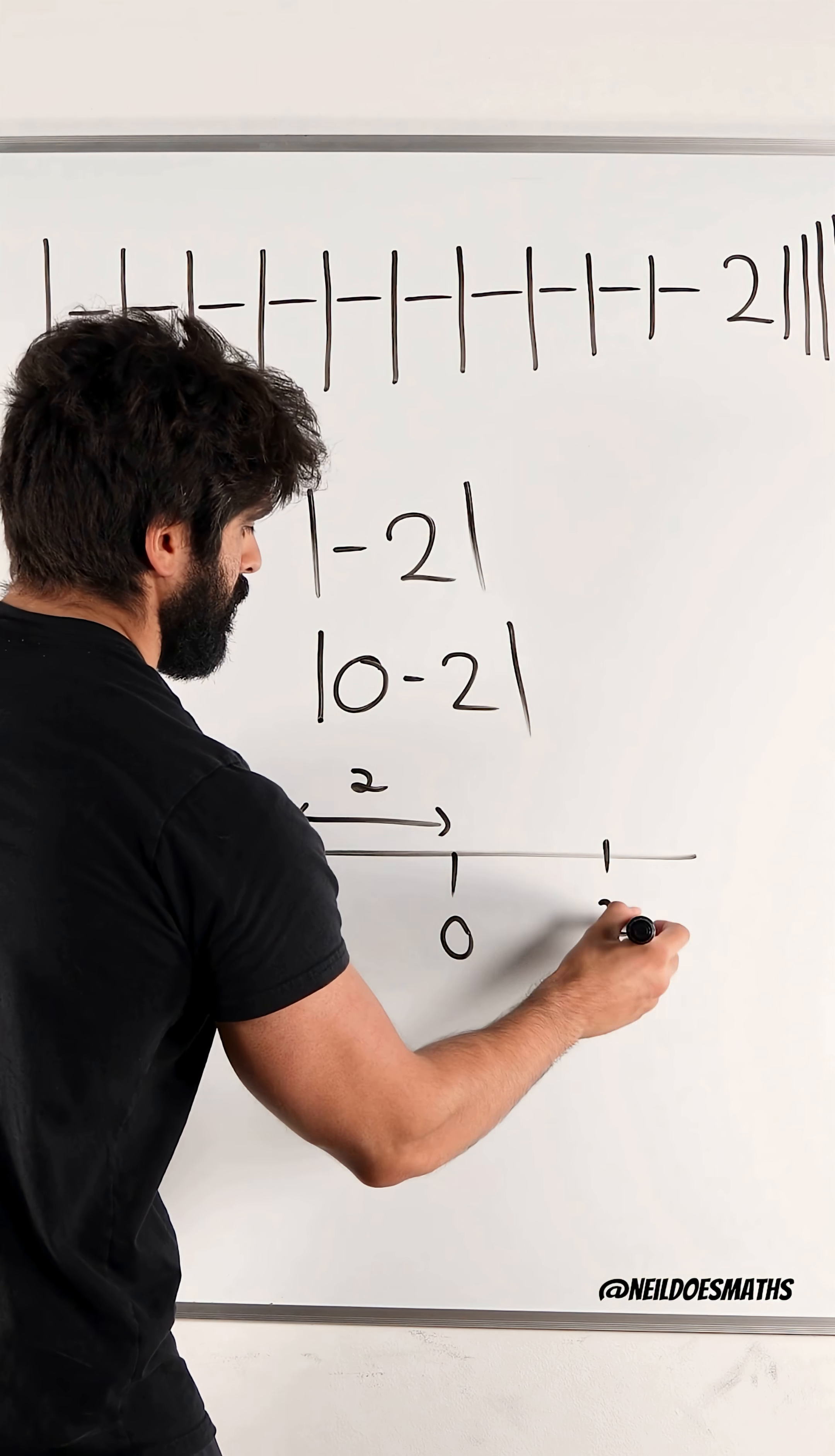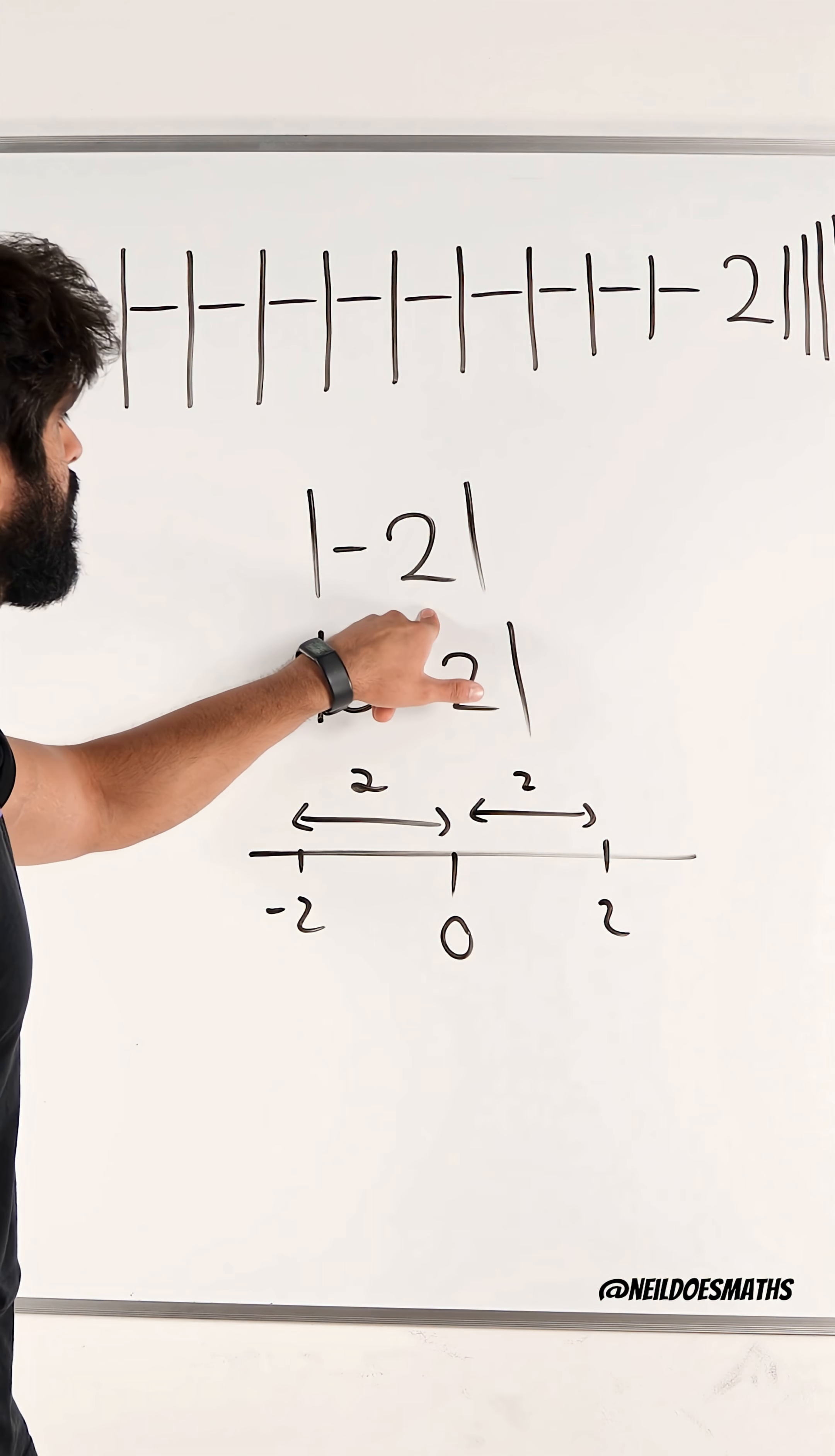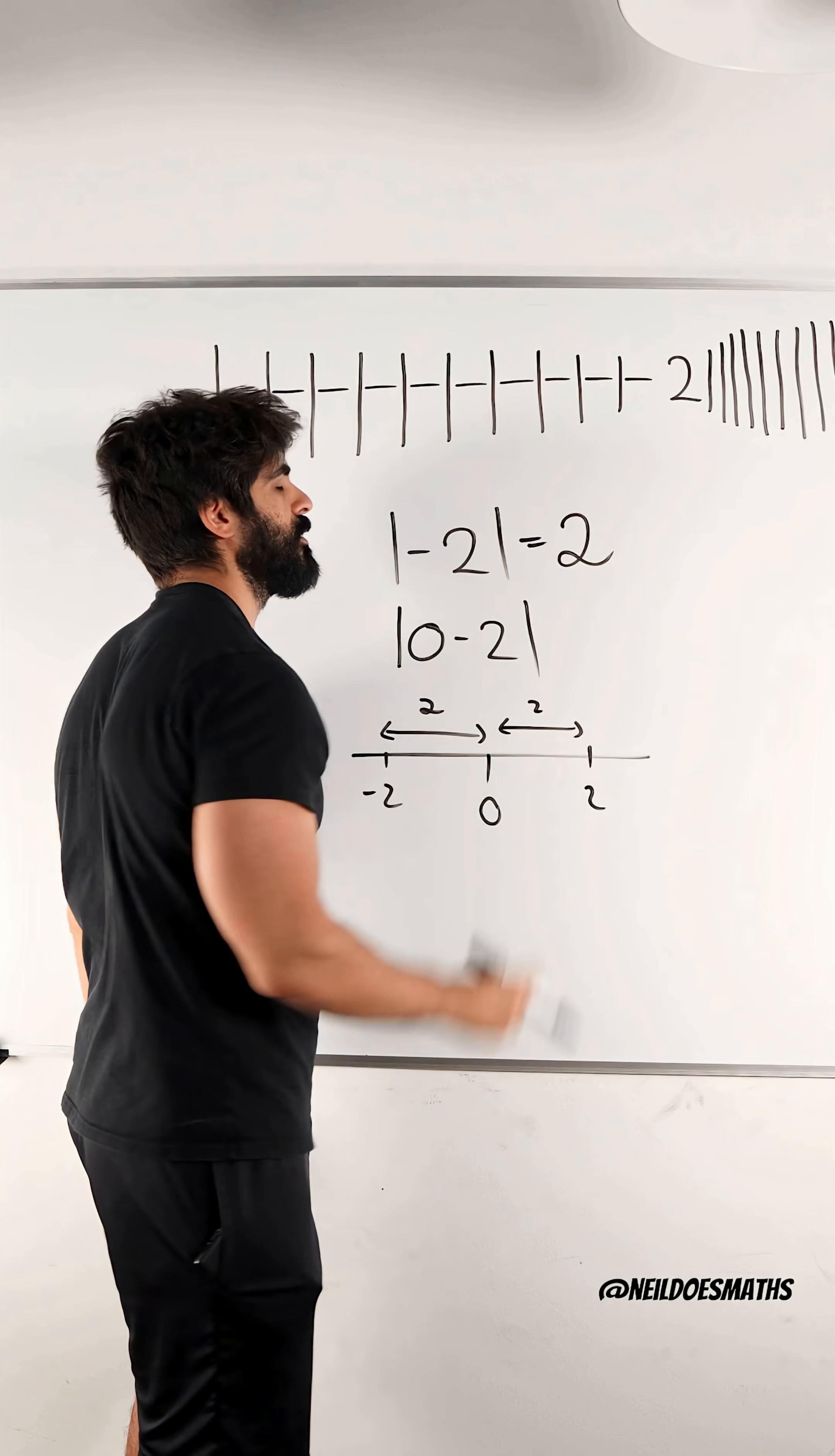Which means we could look at it the other way around as well. We could look at it like this, it gives us the same answer. So a modulus around a negative just outputs the positive value.